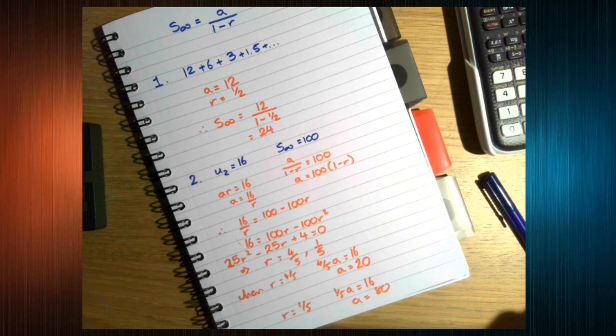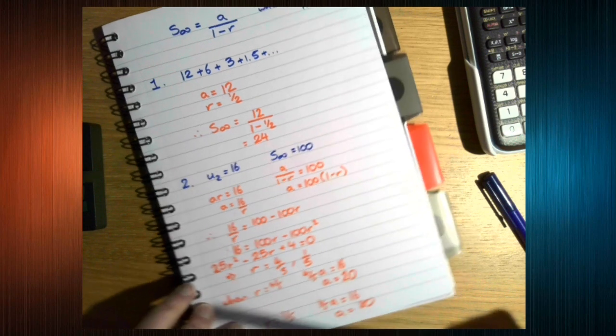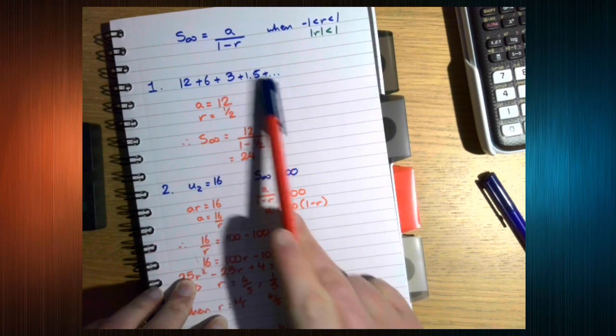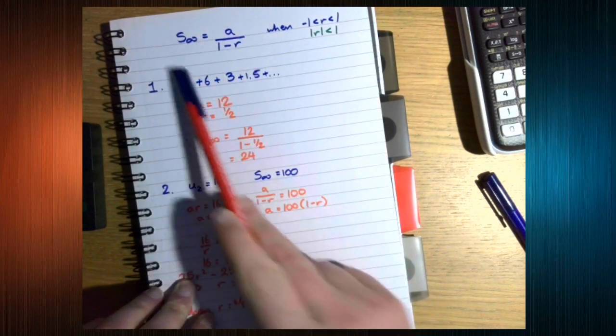And that's sum to infinity. It's just this idea that if a geometric series is converging, we can work out the total that it converges to.